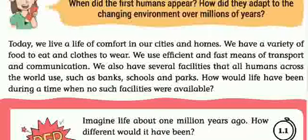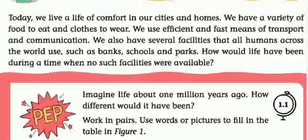Today, we live a life of comfort in our cities and homes. We have a variety of food to eat and clothes to wear. We use efficient and fast means of transport and communication. We also have several facilities that all humans across the world use, such as banks, schools, and parks. At home, you have separate rooms for everything — kitchen, bedroom, living room, drawing room.